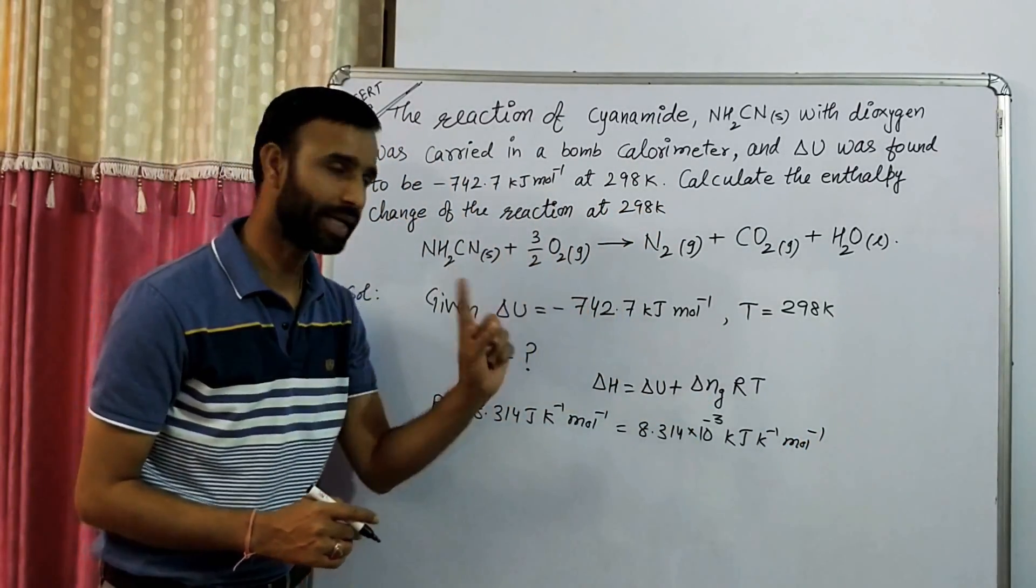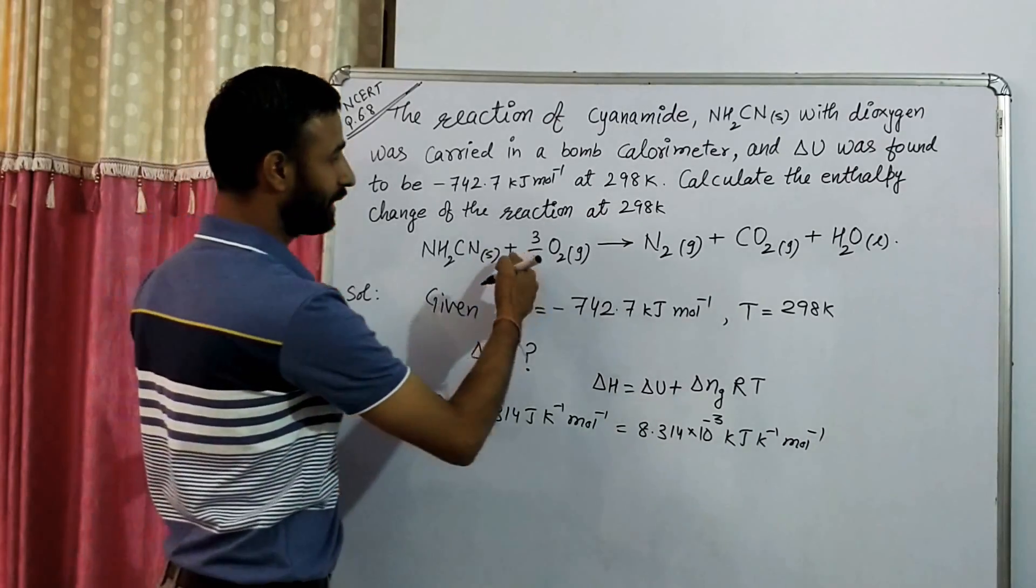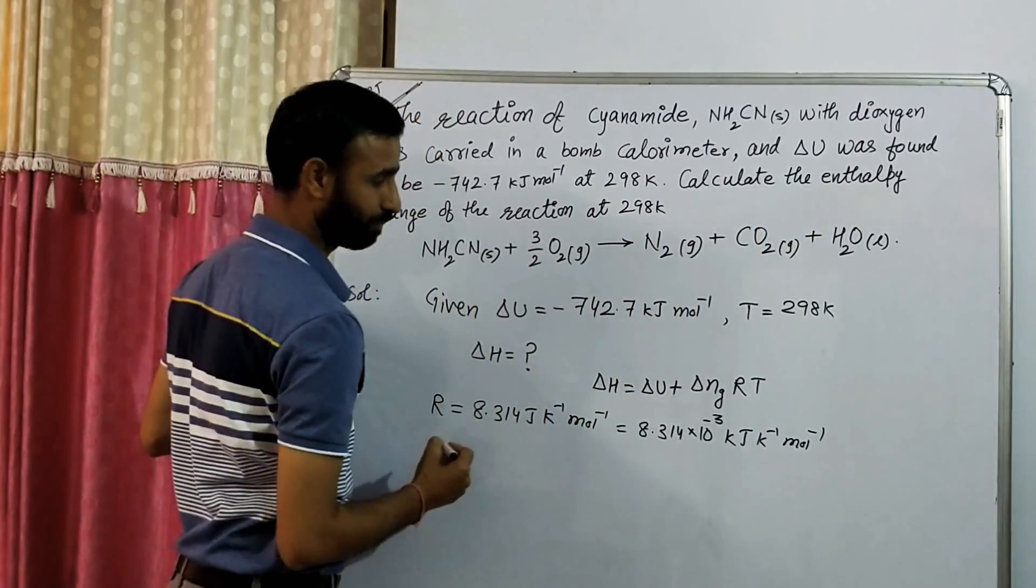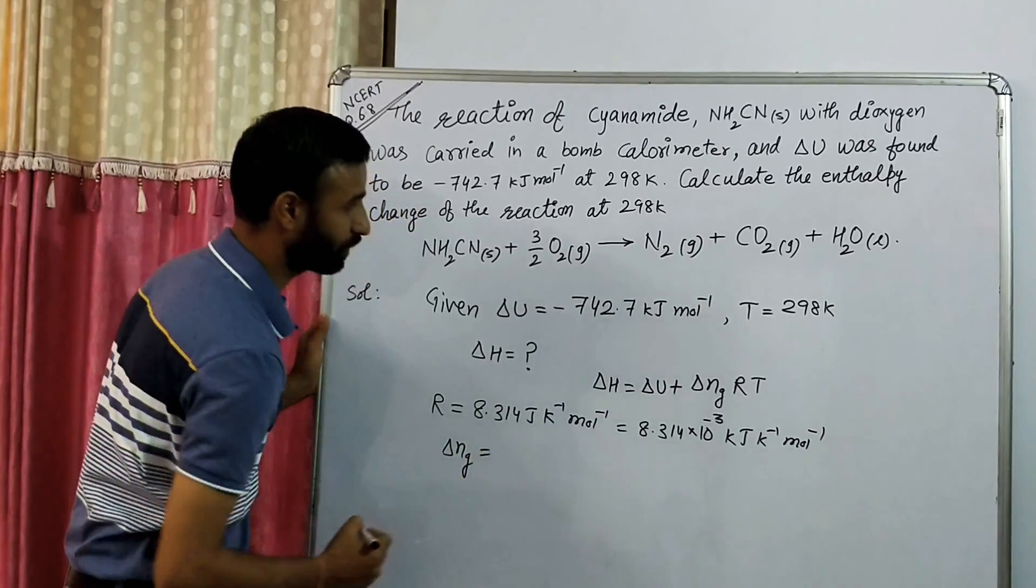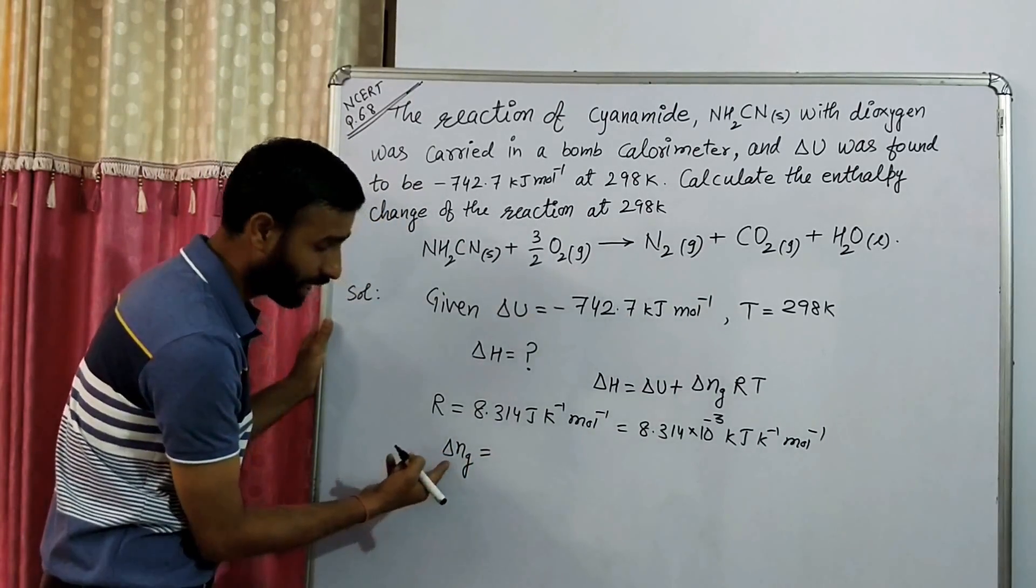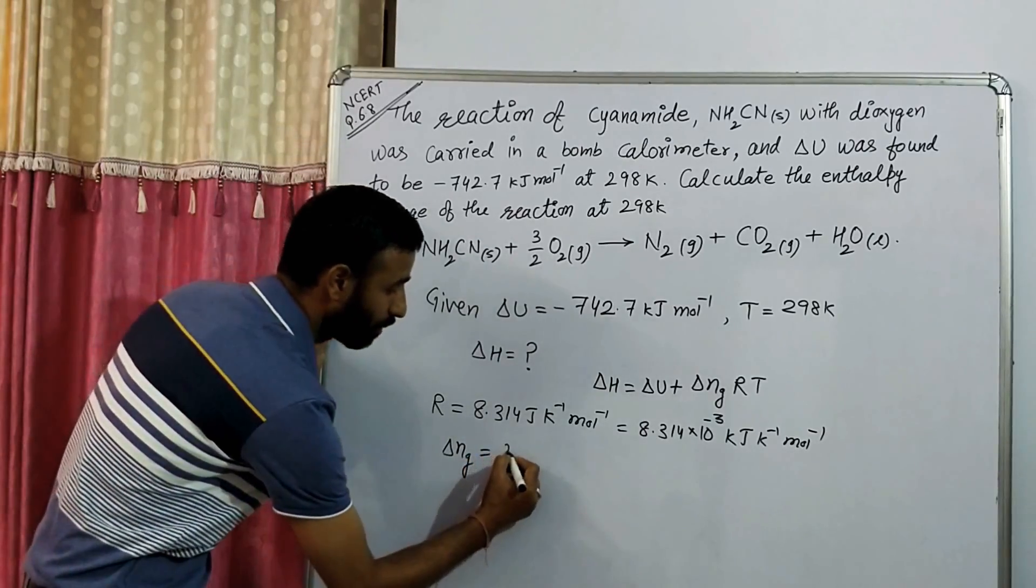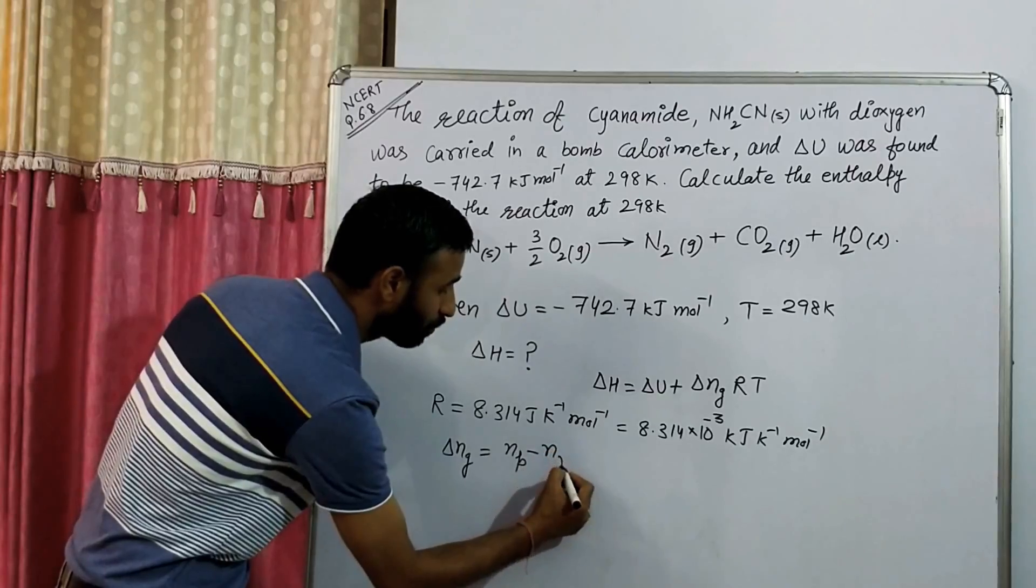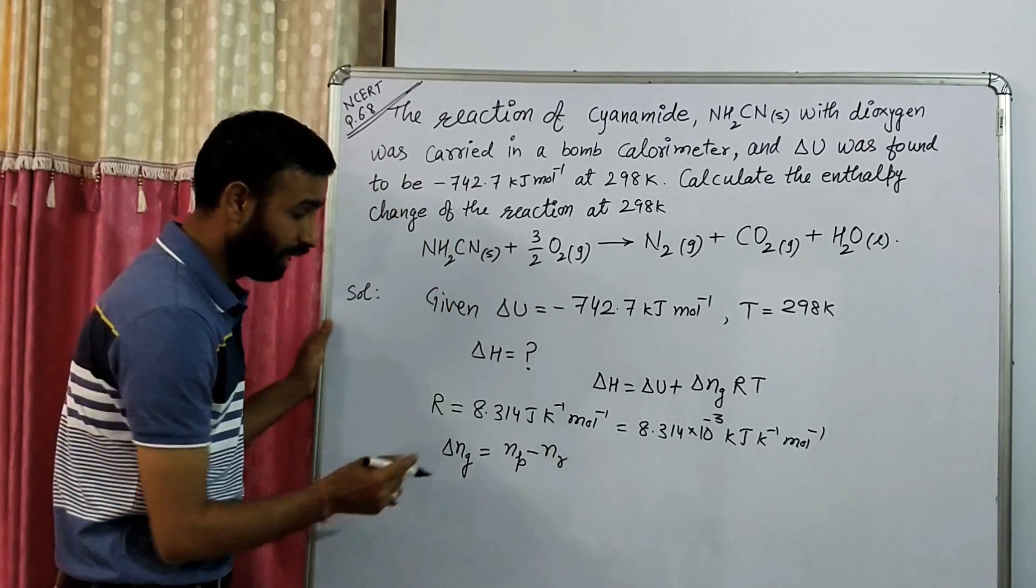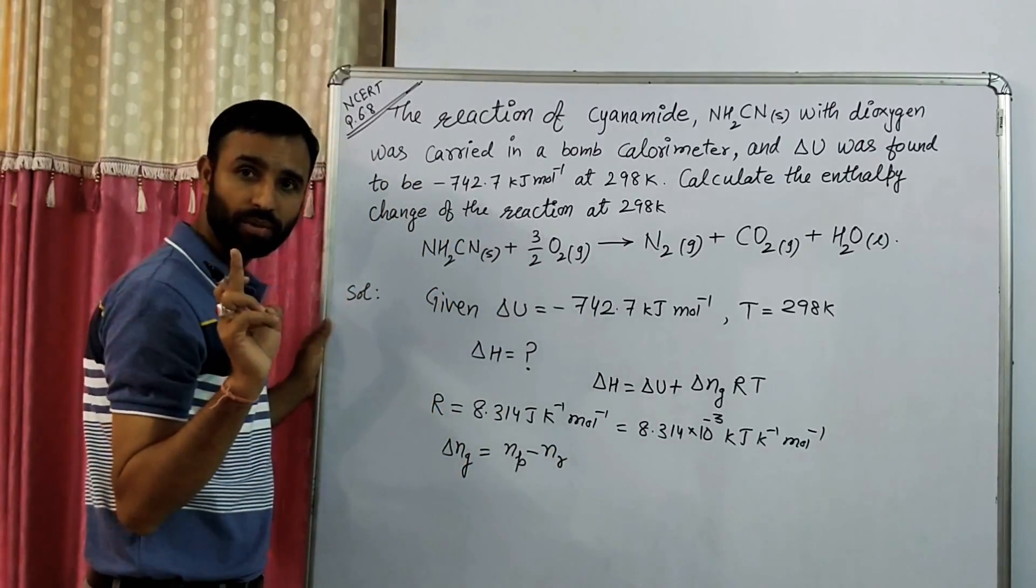Delta Ng. Now, what is delta Ng for this reaction? What is delta Ng? Change in gaseous moles. So number of gaseous moles of product minus gaseous moles of reactant. Only gaseous moles, keep in mind.